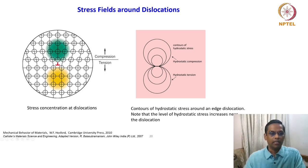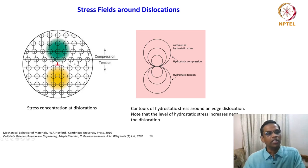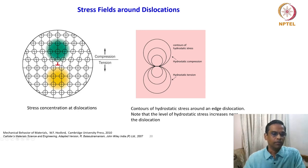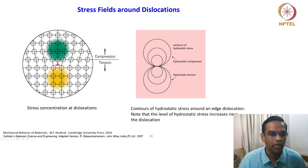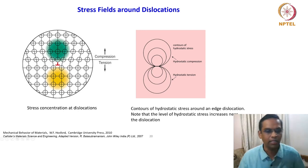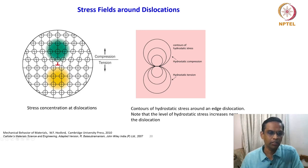If you look at the slide, what is shown here on the left hand side is a nice image which clearly shows that the extra half plane is there and there is a dislocation — the positive edge dislocation. You see the second half of the lattice, and as in the previous slide, this green shade nicely gave some kind of a stress field around the edge dislocation.